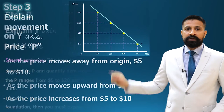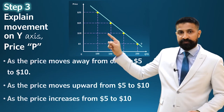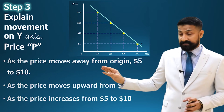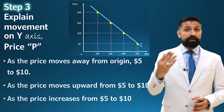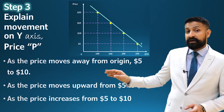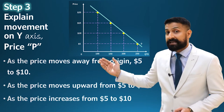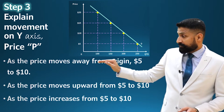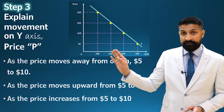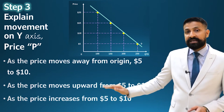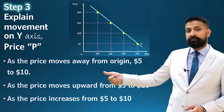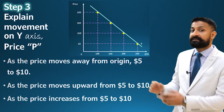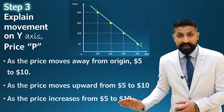Step three: you have to explain the movement on the Y-axis. There are three preferable sentence structures — you can also write your own. The first: 'As the price moves away from the origin, from 5 to 10.' The second: 'As the price moves upward.' The third: 'As the price increases from 5 to 10.' The third is the simplest form of explaining the Y-axis movement.